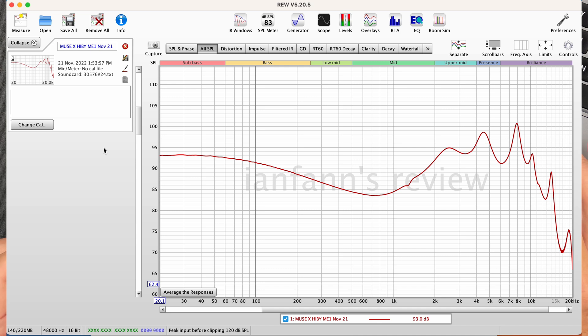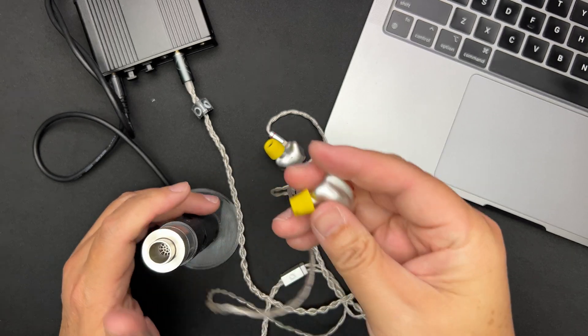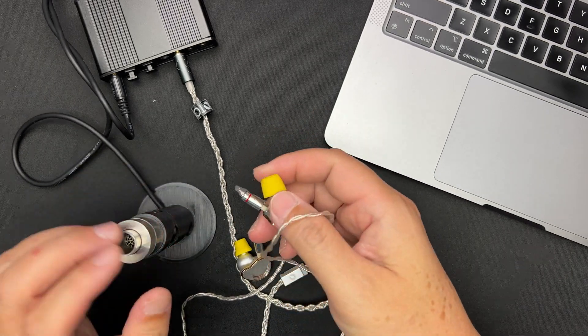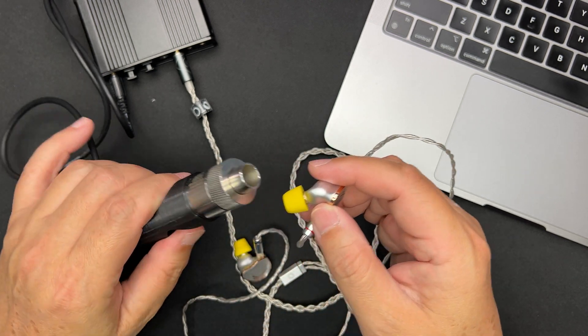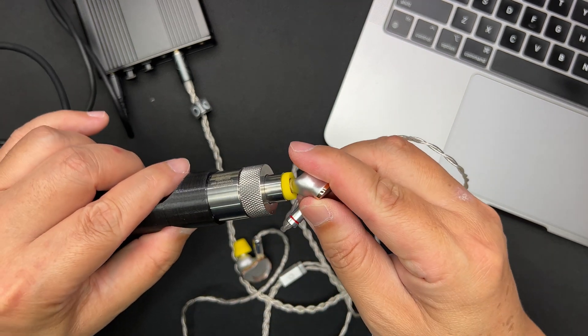That's the left side. Now let's take it out from the coupler and let's put the right side and see how this side graphs.